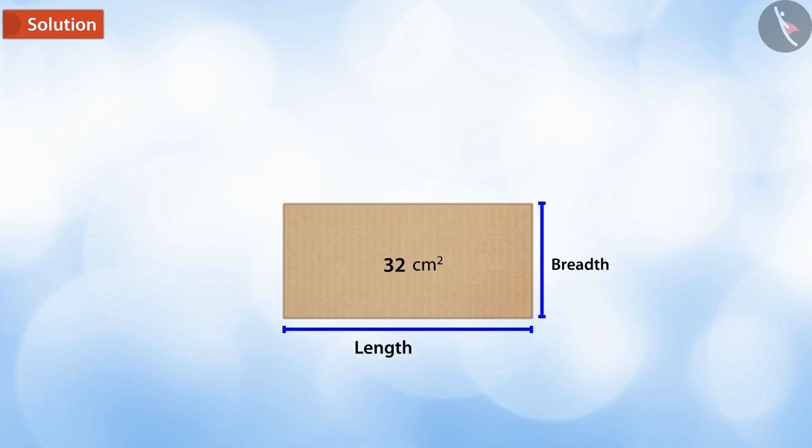First, let's assume the length of the box to be x centimeters. Then, to find the breadth, we need to double the length. On subtracting 12, we get 2x minus 12.